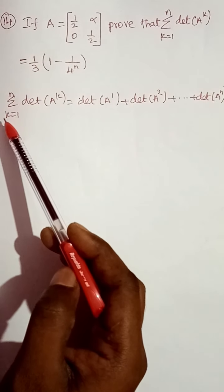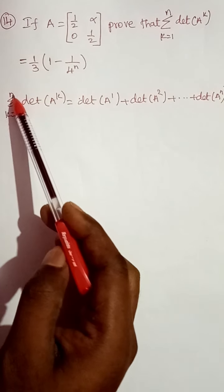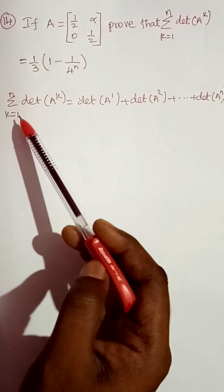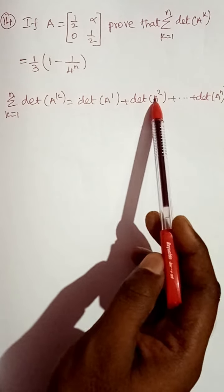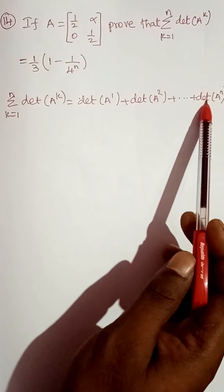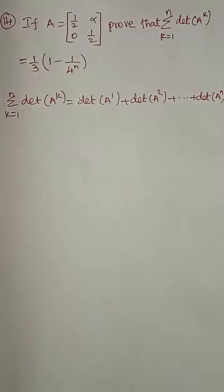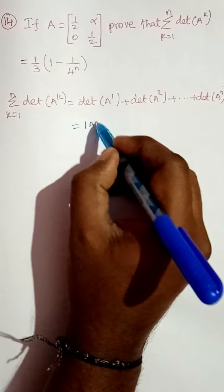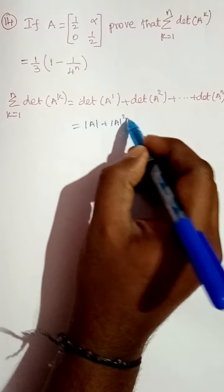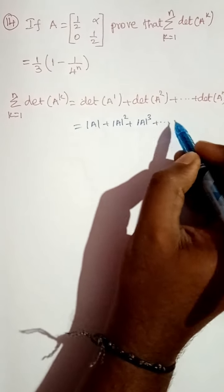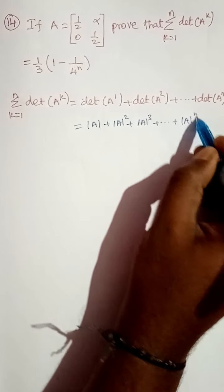So summation k equal to 1 to n of determinant of A power k — we can write this as determinant of A^1 when k=1, determinant of A^2 when k=2, determinant of A^3 when k=3, and so on up to determinant of A^n. So we have to find each of these values: determinant of A, plus determinant of A squared, plus determinant of A cubed, and so on plus determinant of A power n.